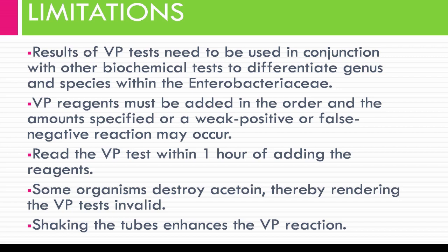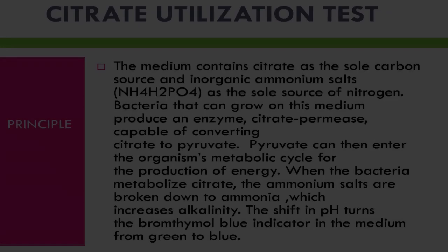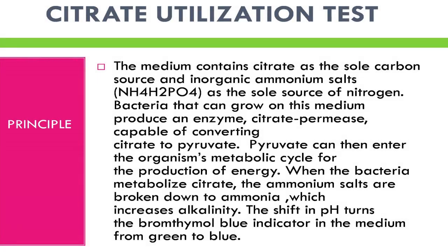VP reagents must be added in the order and amounts specified, or a weak positive or false negative reaction may occur. A weak positive reaction may appear as a copper-like color due to the reaction of potassium hydroxide and alpha-naphthol. Read the VP test within one hour of adding reagents; potassium hydroxide and alpha-naphthol may react to form a copper-like color causing a potential false positive. Some organisms destroy acetoin, rendering the VP test invalid. Shaking the tube enhances the VP reaction.